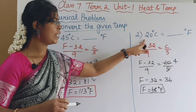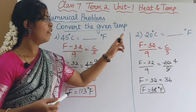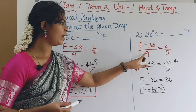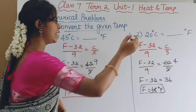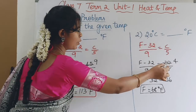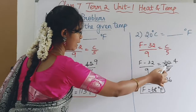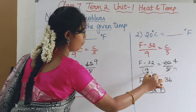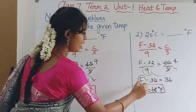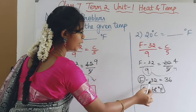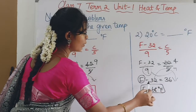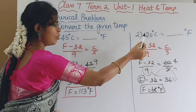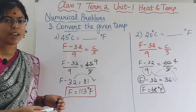Second, convert 20 degrees Celsius to Fahrenheit. Using the formula (F - 32) / 9 = C / 5 with C = 20: substituting gives (F - 32) / 9 = 4, so F - 32 = 36, and F = 68 degrees Fahrenheit. So 20 degrees Celsius equals 68 degrees Fahrenheit.